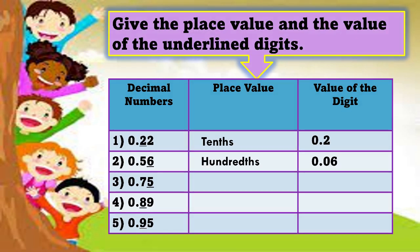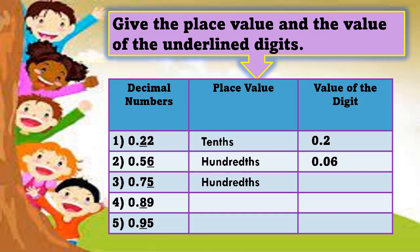Let's go to number 3: 0.75. The underlined number is 5. And the place value is? Yes, it's hundredths. And the value of the digit is? 0.05. Let's go to number 4: 0.89. The underlined number is 8. And the place value is? Very good, it's tenths. And the value of the digit is? 0.8.